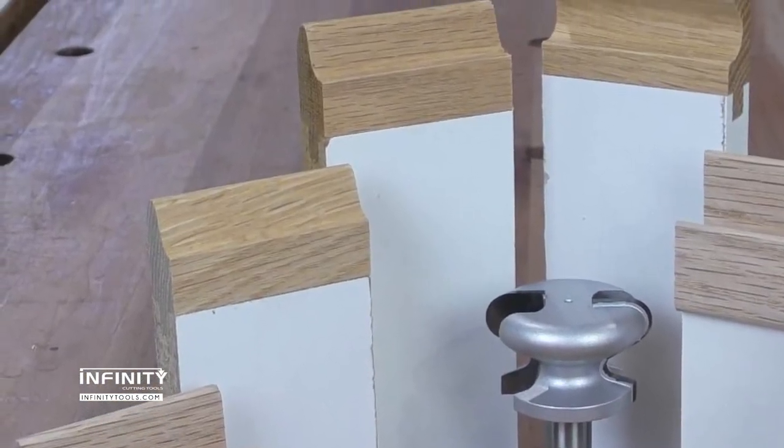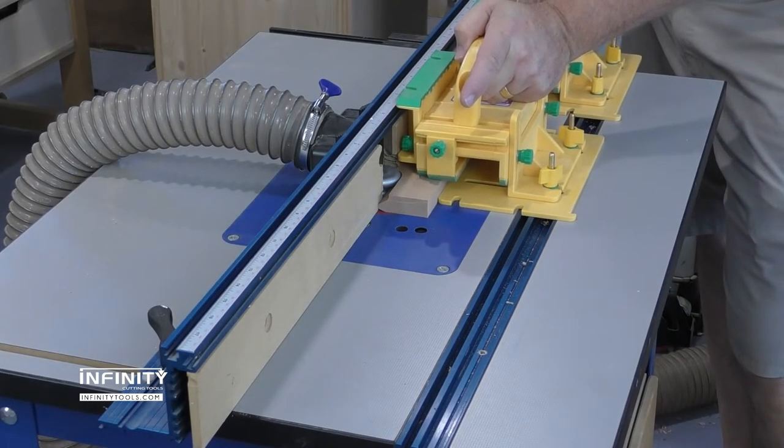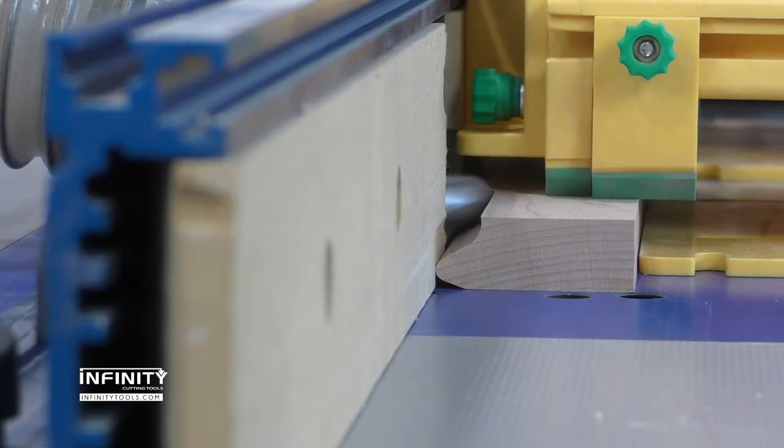The secondary pull profile is even easier to create. The stock is simply held flat on the table and run past the router bit.